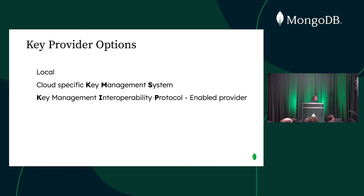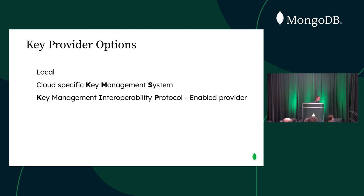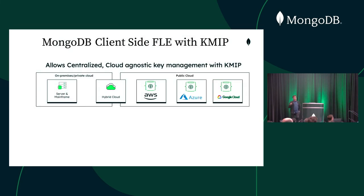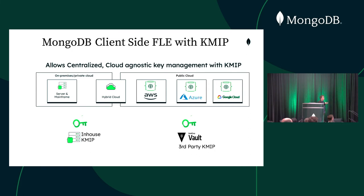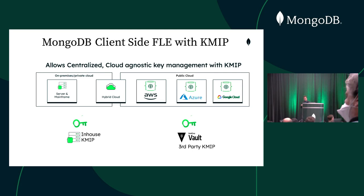Then we have something called KMIP — Key Management Interoperability Protocol — which is a standard way of managing your keys. There are different software providers that support it, and today I'm going to talk about HashiCorp Vault, which is a KMIP-enabled provider. This allows a centralized, cloud-agnostic key management system — you can store the key material and envelope keys in HashiCorp Vault or an in-house KMIP server.